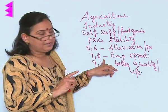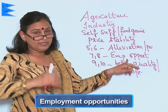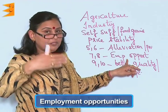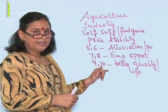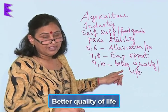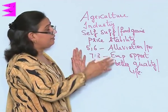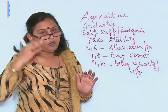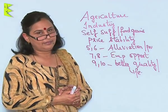The seventh and the eighth five-year plan in India focused on employment opportunities, believing that by providing employment to the people they would be able to solve most of the problems in India. The ninth and the tenth five-year plan believed in a better quality of life — that is, building excellent infrastructure. So the five-year plans have varied goals, and these are termed as short-term goals.